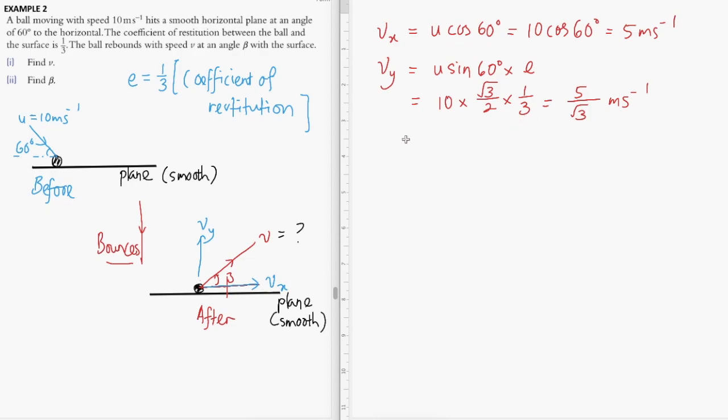By using the Pythagorean theorem, we can find the speed of the ball after the collision, which is given by v = √(vx² + vy²).